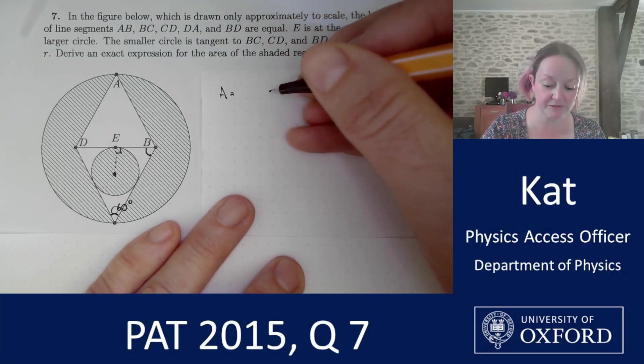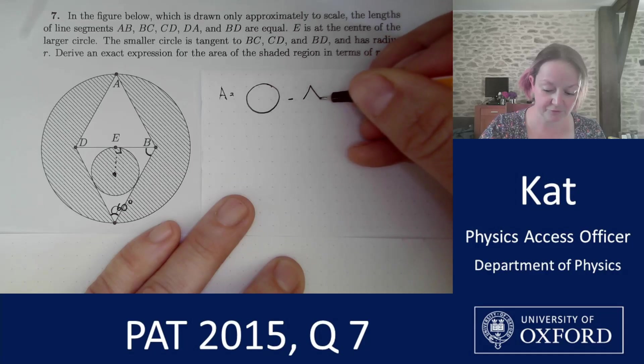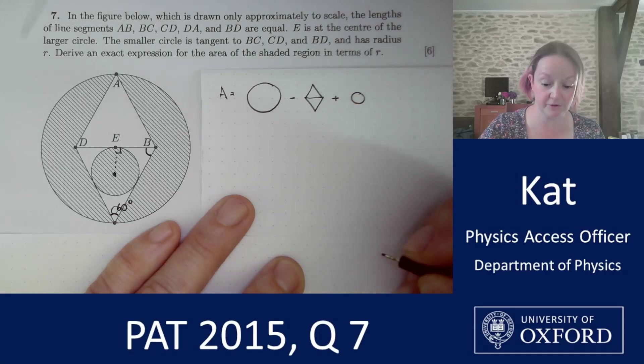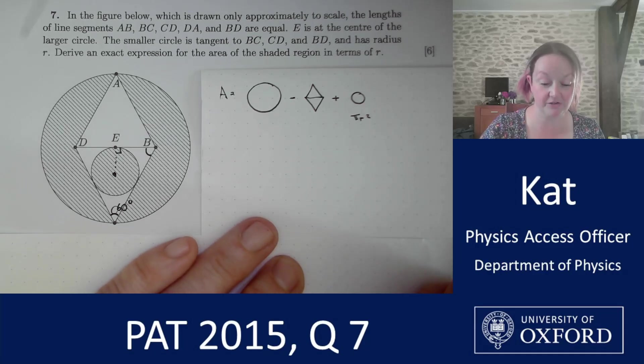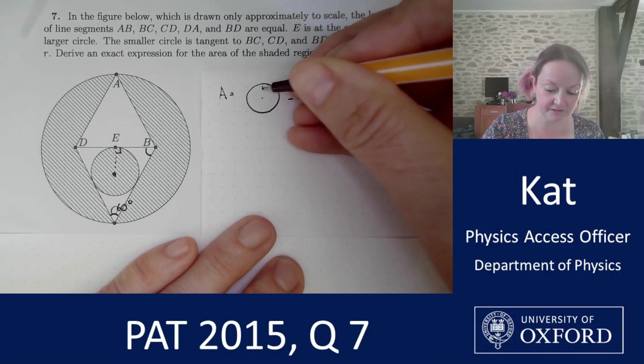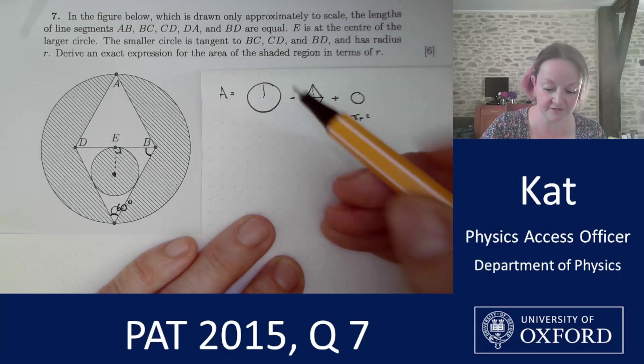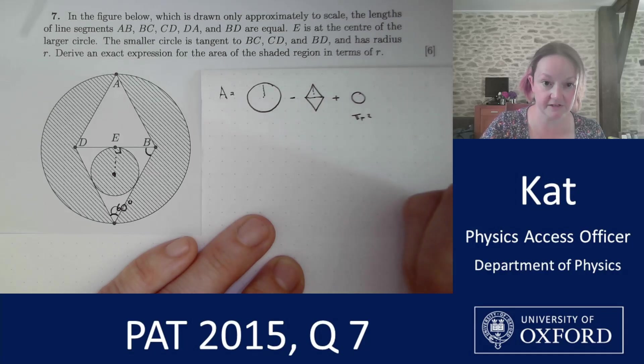So in total what I'm going to be doing is finding the area of the large circle, subtracting the two triangles which form the diamond and then adding on the small circle. That small circle I've been told has a radius R. So I can pencil that one in straight away. That area is going to be pi R squared. To work out the area of the large circle, I'm going to need to find its radius, which is also the perpendicular height of that triangle. So I will need to find that perpendicular height or the radius. And I will also need the length EB so that I can calculate out these triangles.